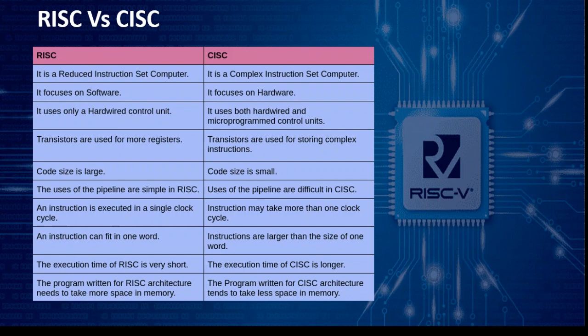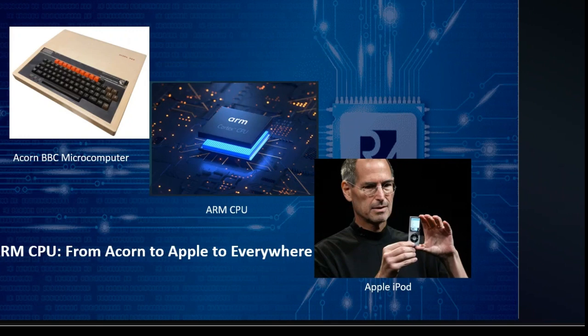The RISC philosophy emerges: not everyone believed that complexity was the answer. Some ingenious thinkers proposed that simpler reduced instruction set computers, or RISC, could outperform the CISC designs. With fewer, more straightforward instructions, CPUs could execute tasks faster and more efficiently.